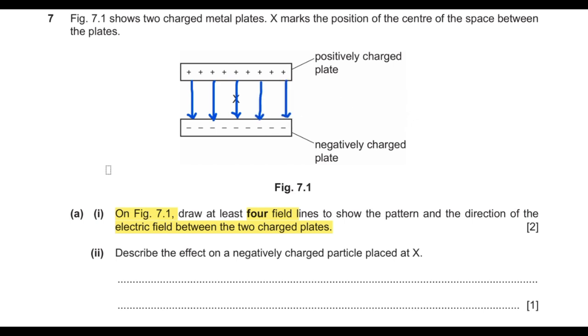The second part asks: describe the effect on a negatively charged particle placed at X. If a negatively charged particle is placed at X, it would be attracted toward plate A (the positive plate).